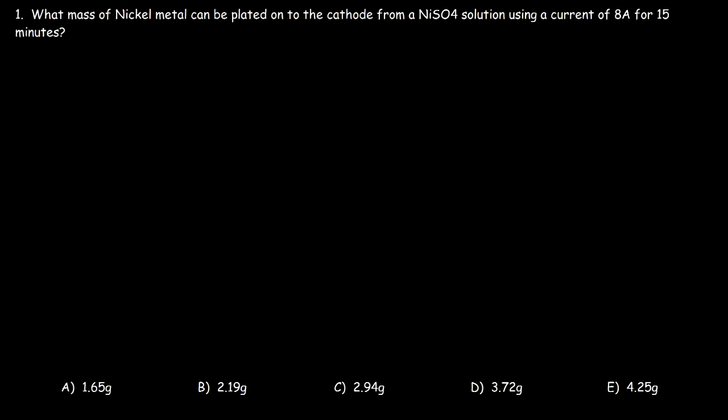In this tutorial we're going to work on some quantitative problems associated with electroplating and electrolysis. What mass of nickel metal can be plated onto the cathode from a nickel sulfate solution using a current of 8 amps for 15 minutes?